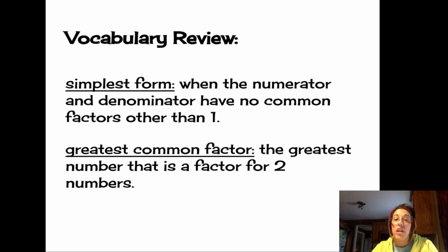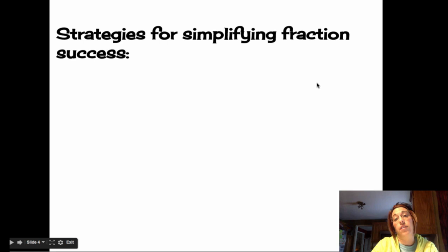The greatest common factor, also known as GCF, is the greatest number that is a factor for two numbers. So the greatest common factor is actually the easiest way to do simplest form.